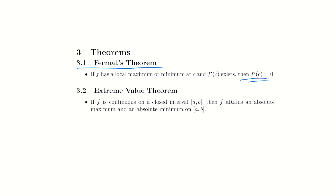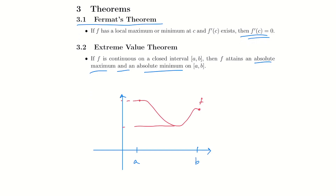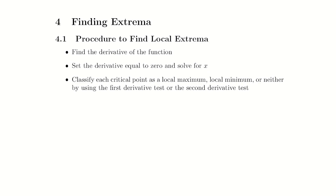The extreme value theorem says that if f is continuous on a closed interval, it attains an absolute maximum and an absolute minimum on that interval. Intuitively: if you have a function on an interval from a to b and it's continuous — meaning you can't pick up your pencil — you have to have a highest point and a lowest point. If f is not continuous, all bets are off. You do not need to quote these theorems; this is really for those who want to know they're on solid footing.